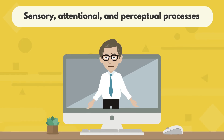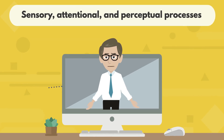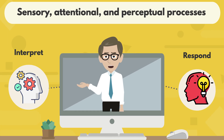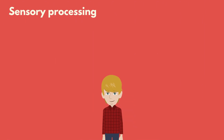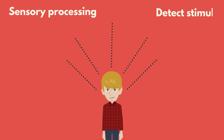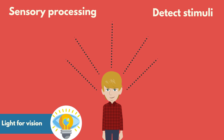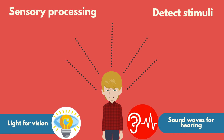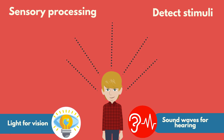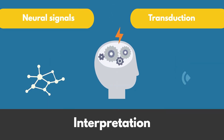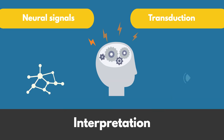Sensory, attentional, and perceptual processes form the foundation of how we interpret and respond to the world around us. Sensory processing begins when sensory organs detect stimuli from the environment, such as light for vision or sound waves for hearing. These stimuli are converted into neural signals through transduction and sent to the brain for further interpretation.